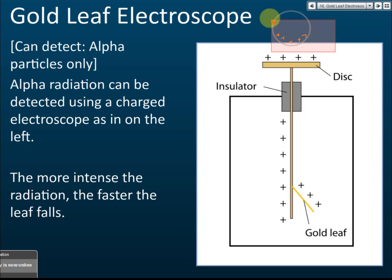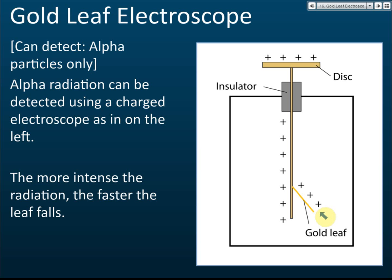To detect the presence of alpha particles, first charge the gold leaf electroscope — you can refer to your Form 3 book to learn how to charge it by induction. You can charge it with either positive or negative charge; either will work. In this illustration, the electroscope is charged with positive charge. After charging, the gold leaf opens.